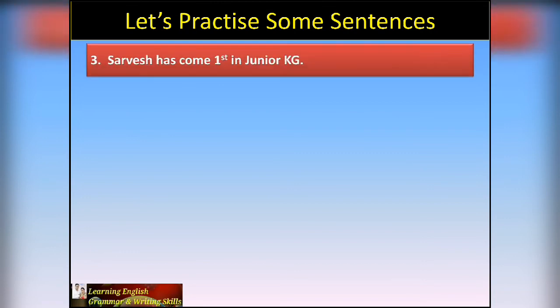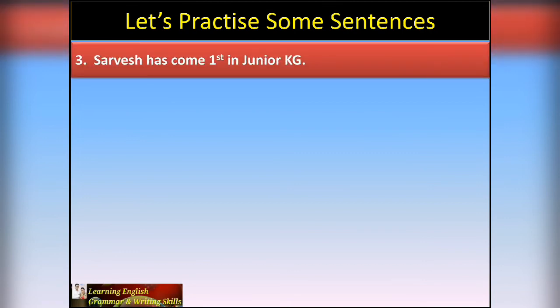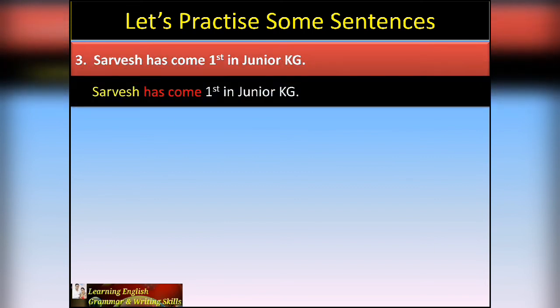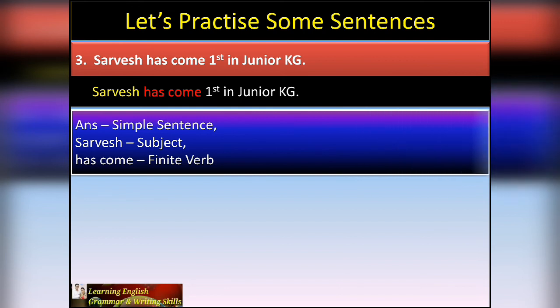Third practice sentence: 'Sarvesh has come first in junior KG.' Here 'Sarvesh' is the subject, 'has come' is the finite verb. There is no other sentence visible — one subject, one finite verb, no coordinator, no subordinator. So this is a simple sentence. Write: subject is Sarvesh, finite verb is 'has come', and 'has come' to 'junior KG' is the predicate. Give full detail to score two marks — just writing 'simple sentence' is not enough.